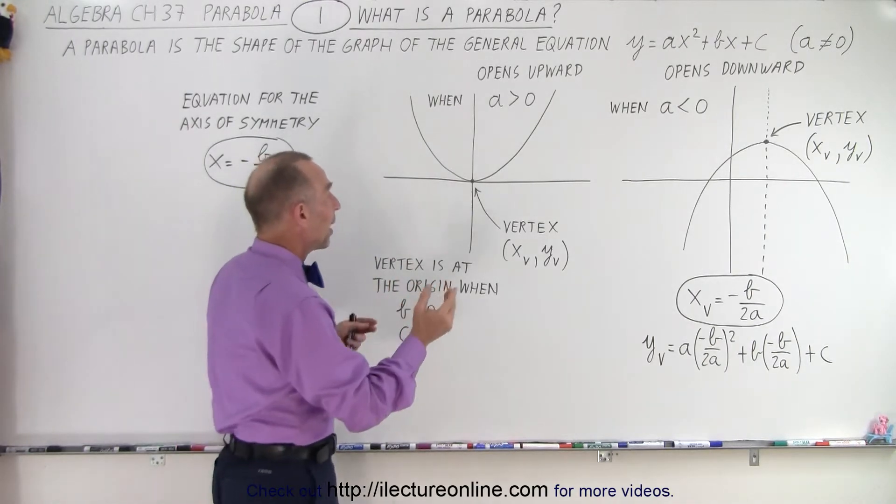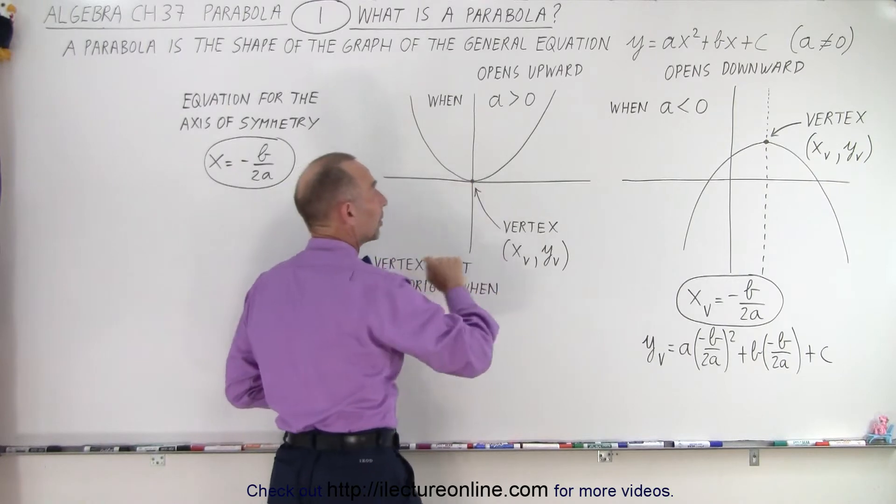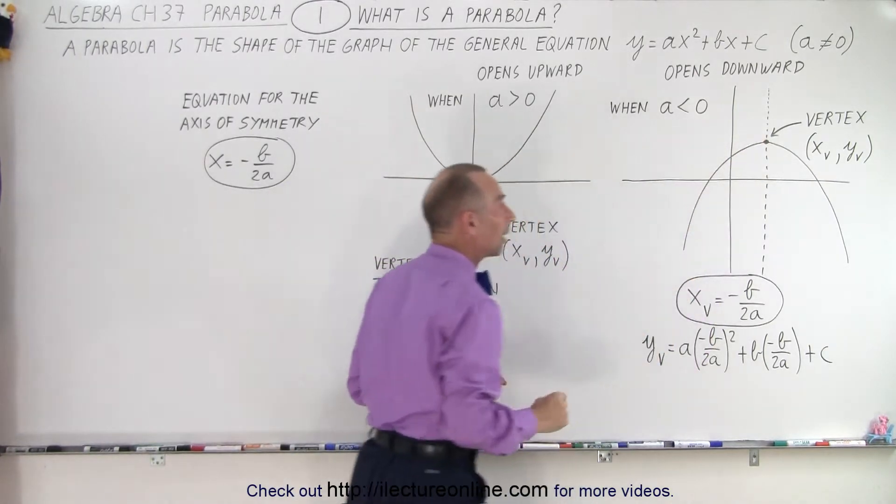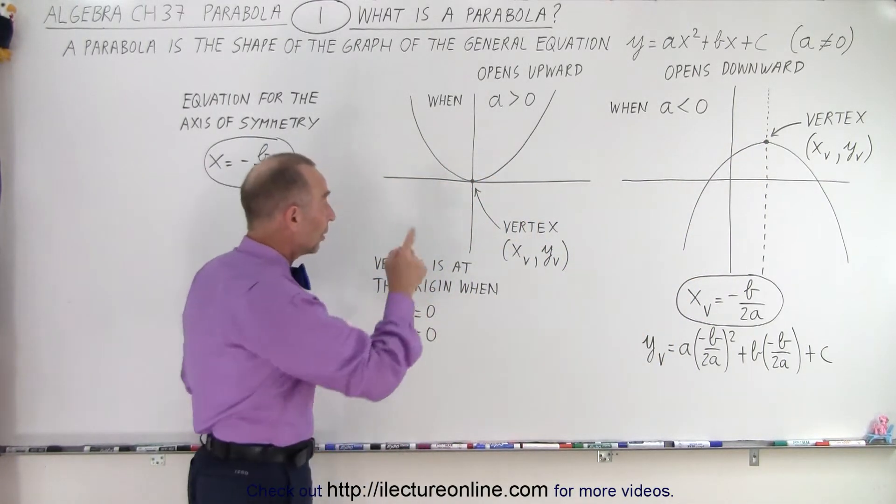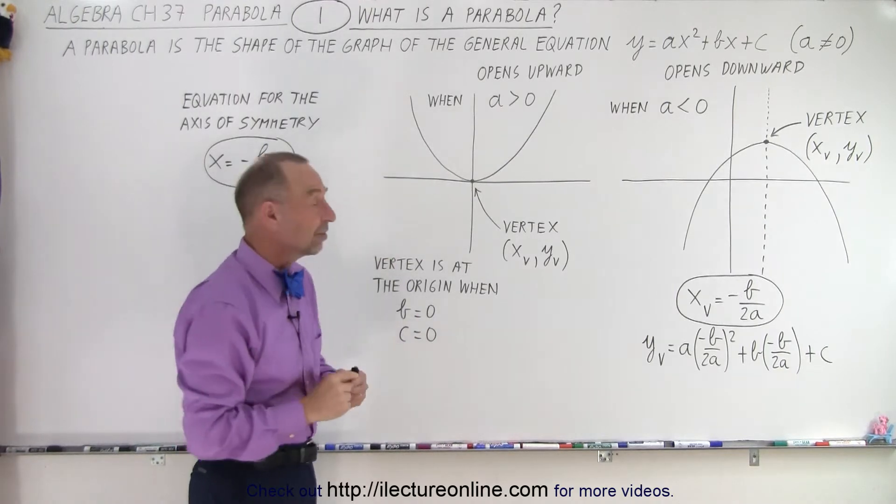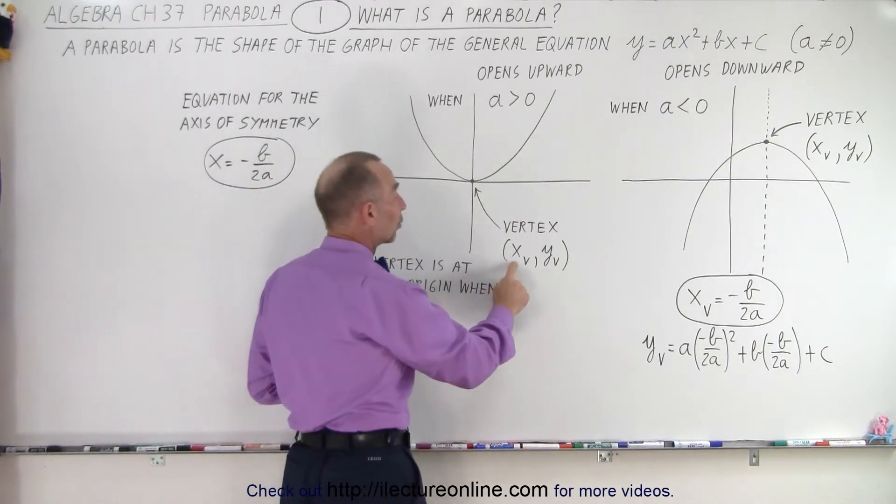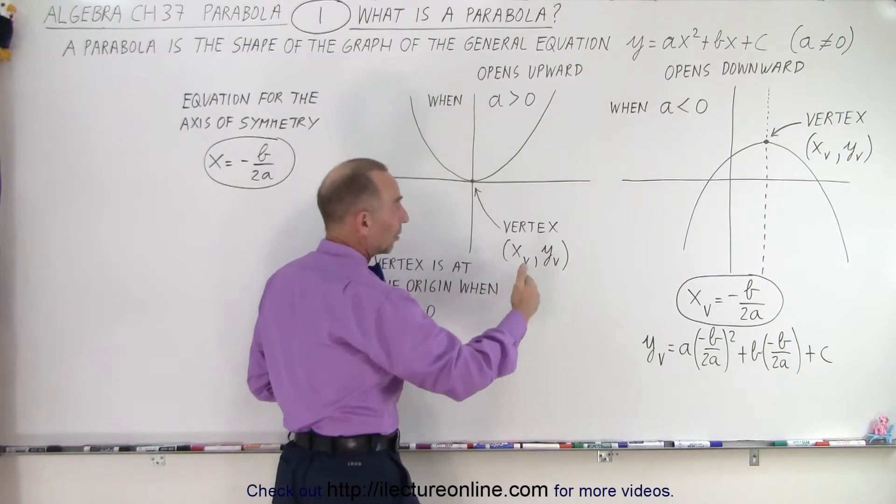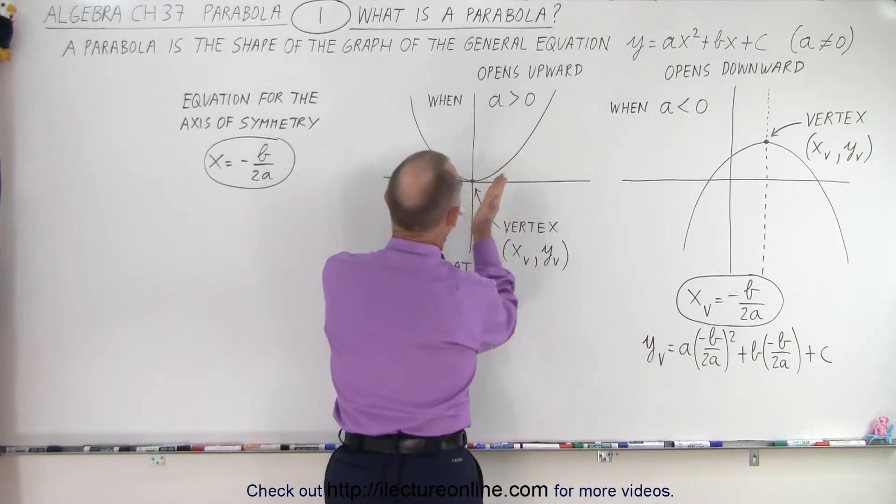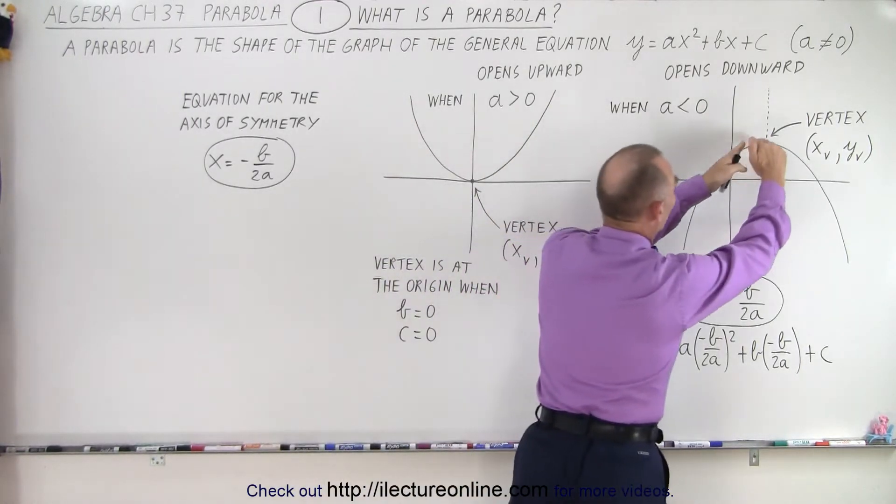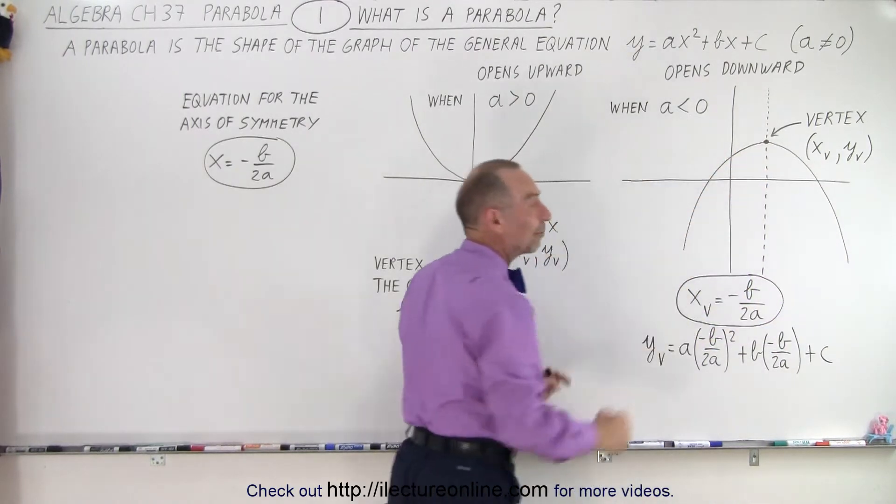So the shape of a parabola, there's either the lowest point on the parabola or the highest point on the parabola. In either case, that point is called the vertex, and sometimes we write it as the coordinates x sub v and y sub v.